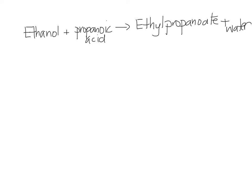So for instance, if we have ethanol and react it with propanoic acid, we form ethyl propanoate and water. The alcohol becomes the prefix and the acid becomes the root.